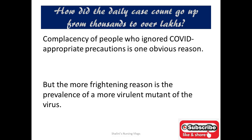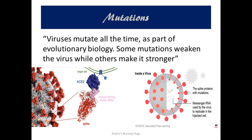To begin with, how did the daily case count go up from thousands to over lakhs? The answer is definitely the complacency of people who ignored COVID-appropriate precautions, which is one of the obvious reasons. But the more frightening reason is the prevalence of a more vigilant mutant of the virus.